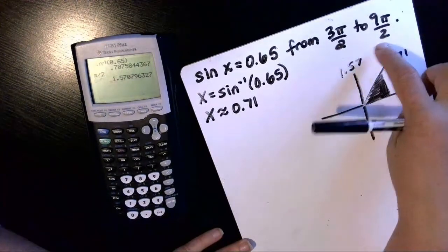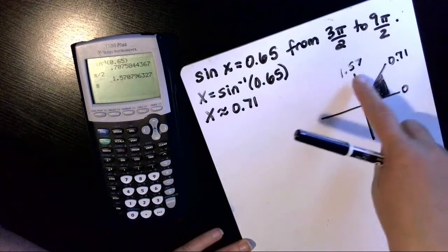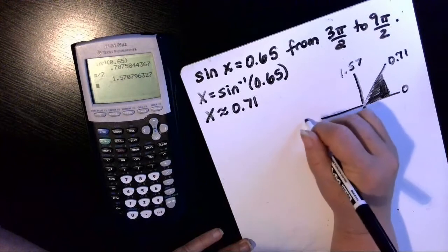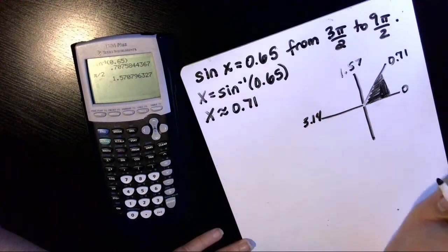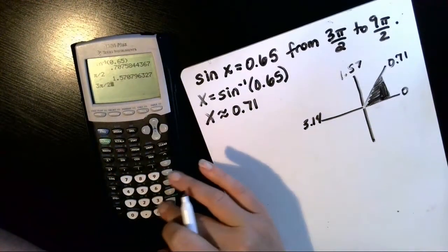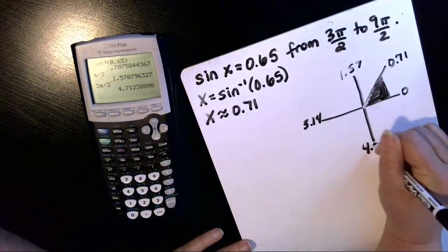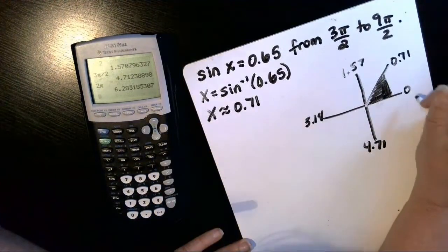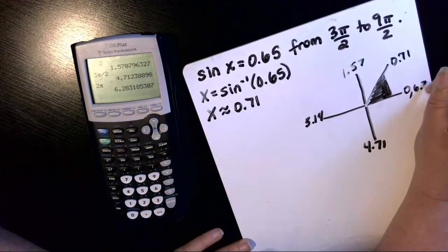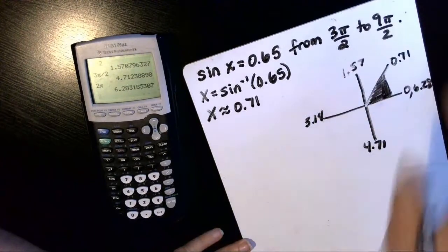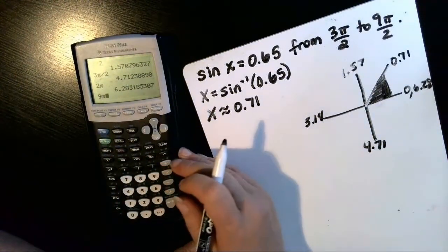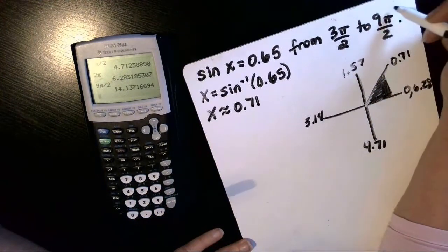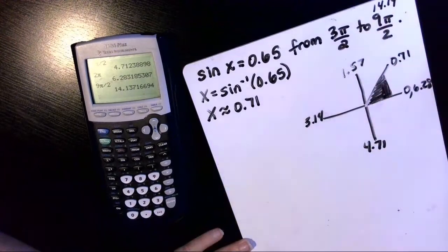But that's not in the range from 3 pi over 2 to 9 pi over 2 because it's in quadrant 1. So next, after pi over 2 is pi. That's 3.14. Then 3 pi over 2 would be 4.71. And 2 pi is 6.28. And 9 pi over 2, where we have to stop looking for values, is 14.14. So this is where we want to stop.